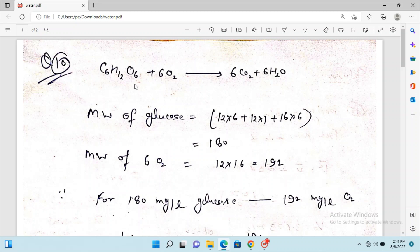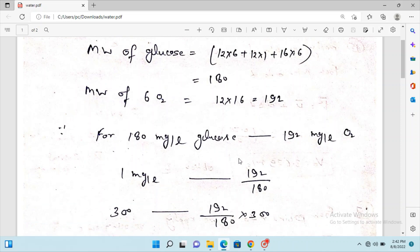Question 10 gives us glucose and asks the requirement of oxygen for 300 grams of glucose. In this reaction, the molecular weight of glucose, C12H12O6, is 180, and molecular weight of oxygen in this reaction is 192.